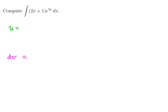Now what should we pick? Well, notice that the first bit right here is algebraic, the 2x plus 1, and this bit is an exponential. So we should let u be the algebraic bit, and we should let dv be the exponential bit.